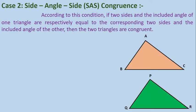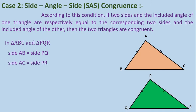Let's understand by an example. In triangle ABC and triangle PQR, side AB equals side PQ, side AC equals side PR, and angle A equals angle P. So we can say that triangle ABC is congruent to triangle PQR under SAS congruence.